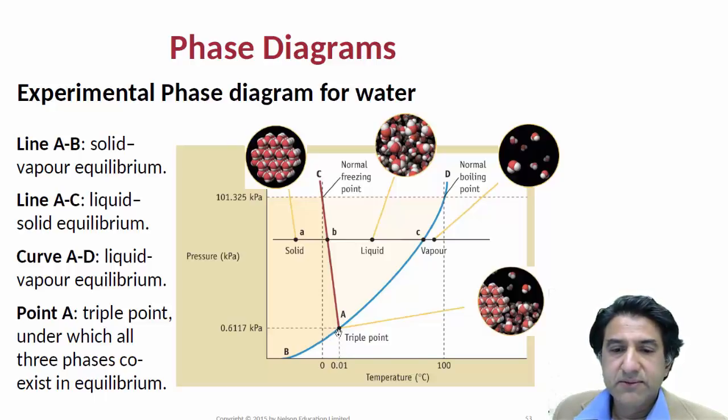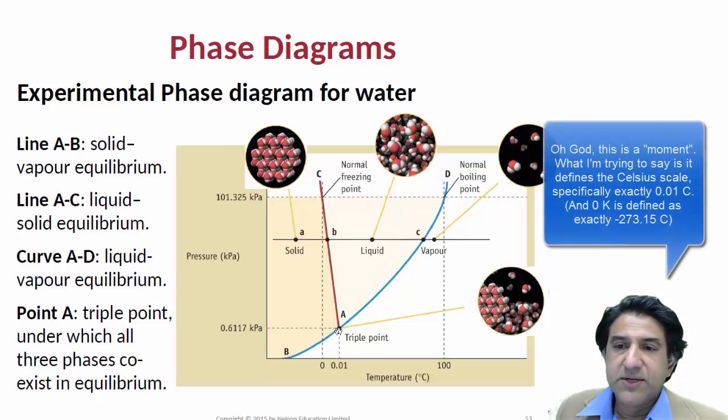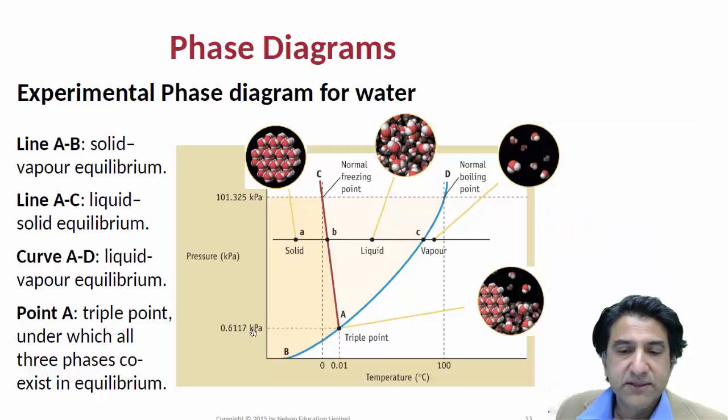And that's why we have a triple point. And this is a unique point for water. And it's used to define special properties such as zero degrees and the one bar pressure and standard Celsius scale. So here we have 0.01 at the triple point, at 0.6117 kilopascals. And that's the triple point.